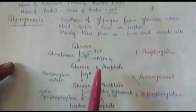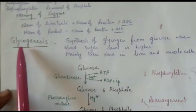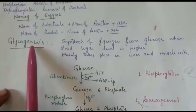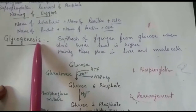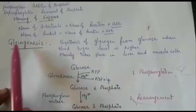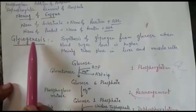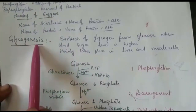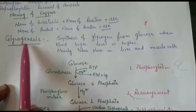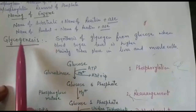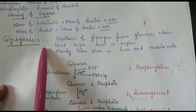First of all, we are taking up glycogenesis. As I mentioned, genesis means synthesis — glycogenesis is the synthesis of glycogen from glucose. When blood sugar level is high, this process is known as glycogenesis. It mainly takes place in liver and muscle cells.